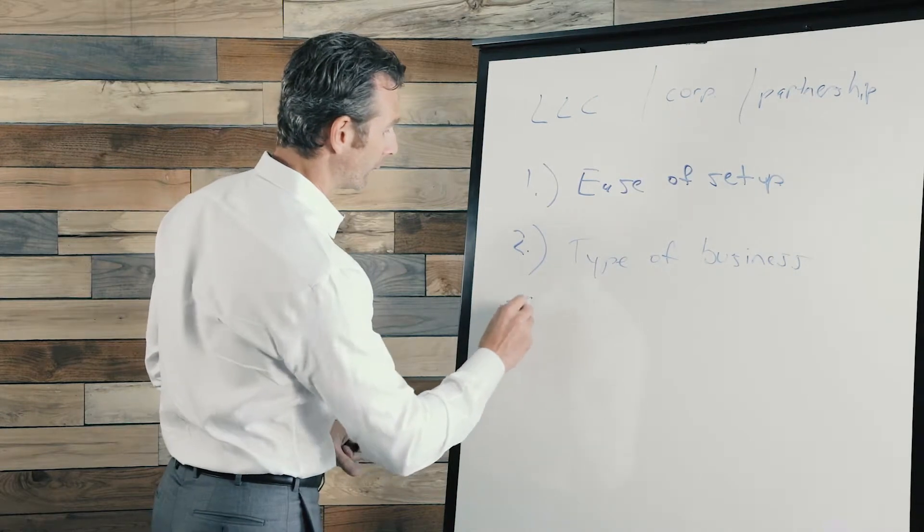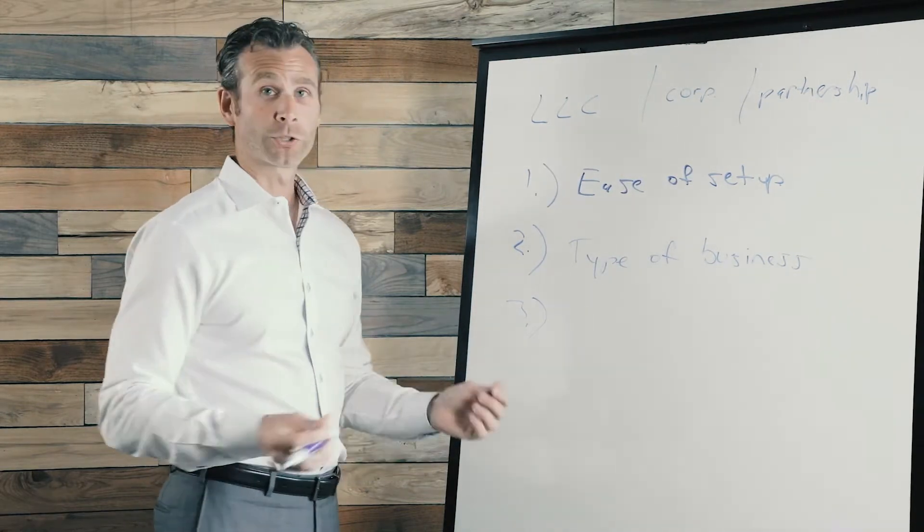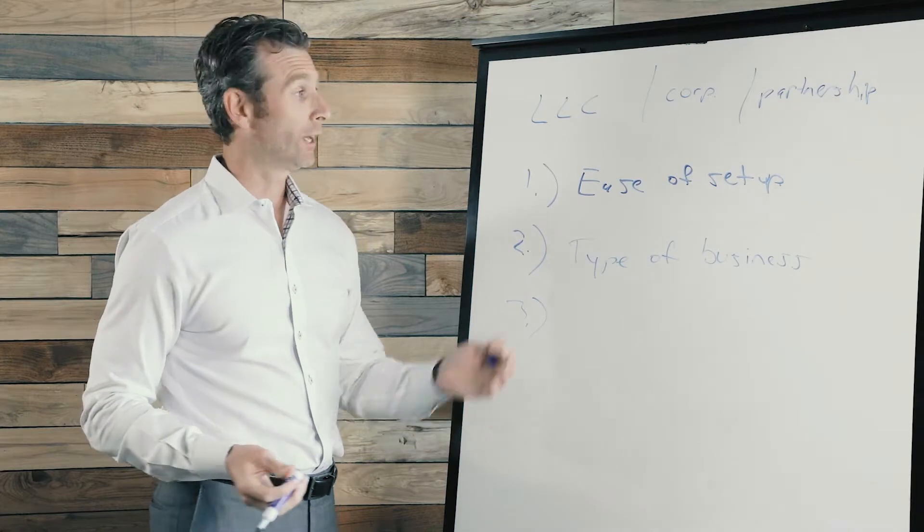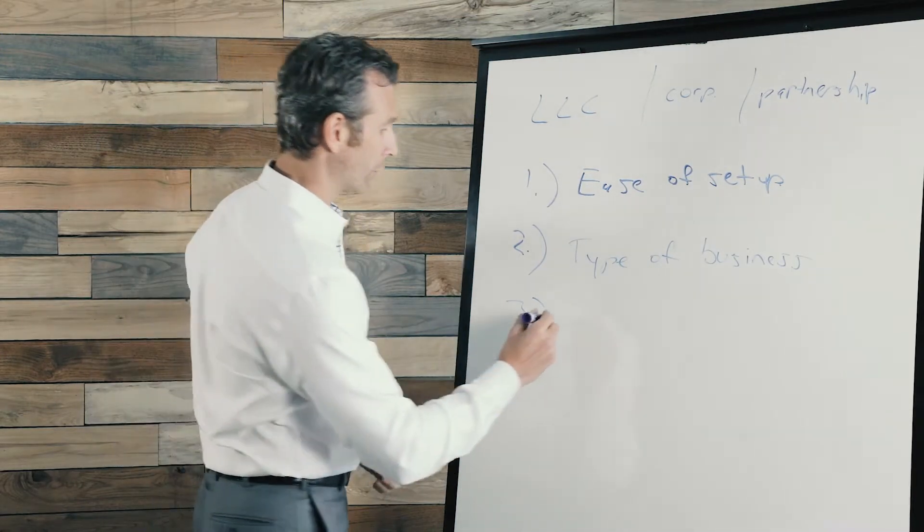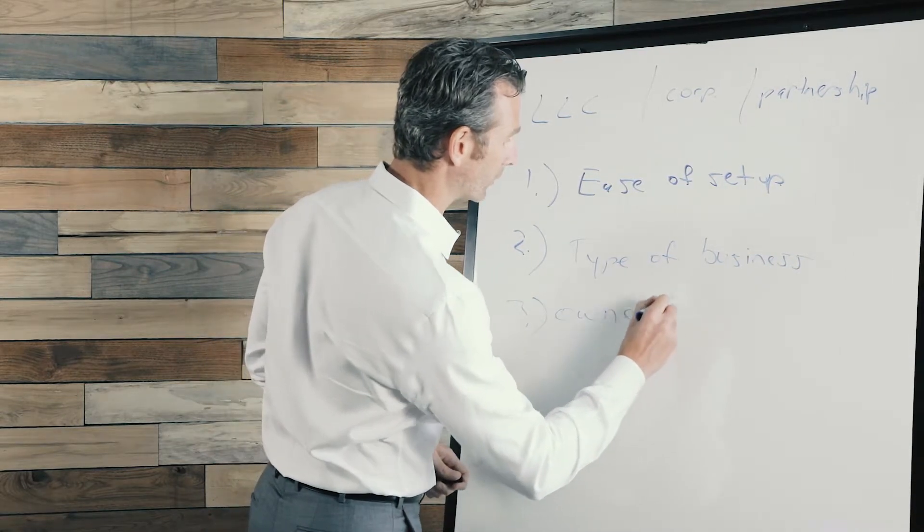And then the third thing you want to think about is ownership. How many owners are you going to have? Are you going to have multiple owners? Are you going to have some owners with different types of interest? So ownership structure is something else that you definitely want to consider.